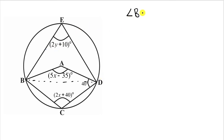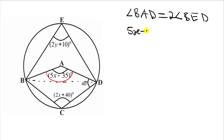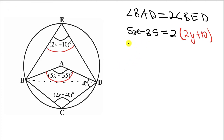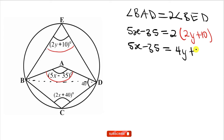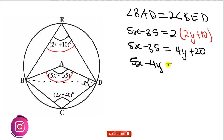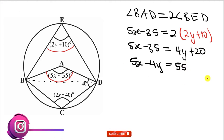If that is the case, then angle BAD is equal to 2 times angle BED. Angle BAD is 5X minus 35, and this equals 2 times angle BED, which is 2Y plus 10. Expanding: 5X minus 35 equals 4Y plus 20. Simplifying further, this gives us 5X minus 4Y equals 55. We can take this as our first equation.